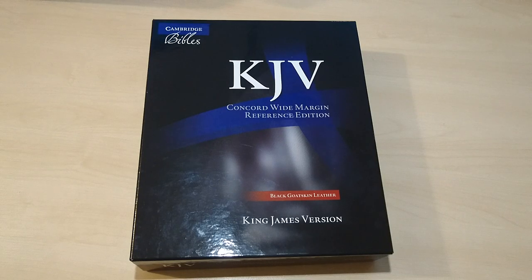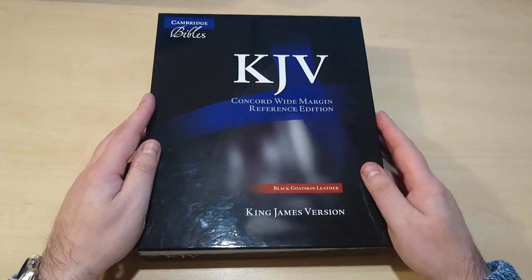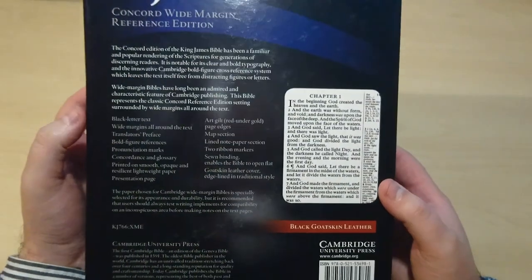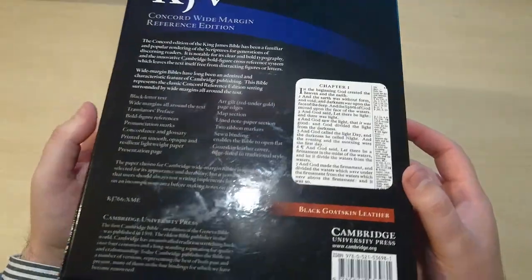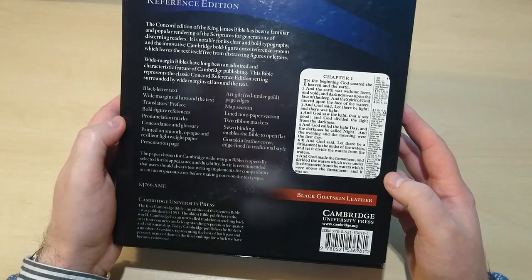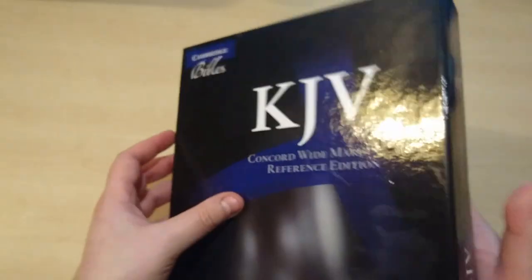Hello everyone, here's another review of a Bible done by Cambridge Bibles. This is a KJV Concord Wide Margin reference edition in black goatskin leather. It comes in this lovely box and as you can see here, it comes with many different things that could be very helpful for your Bible study.